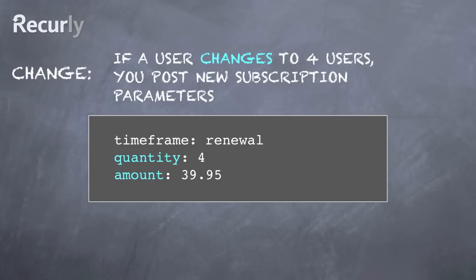Now let's take a look at what happens when a user's level of usage declines. They hit a lower tier, and you want to update their pricing under their subscription plan. You simply update quantity and the related amount, and you post that change to the subscription for that user's account to Recurly's API.